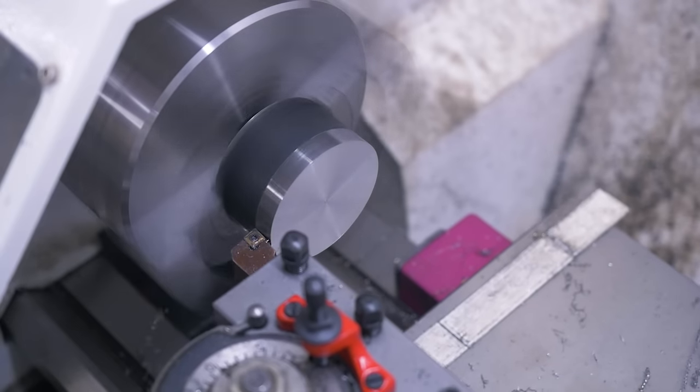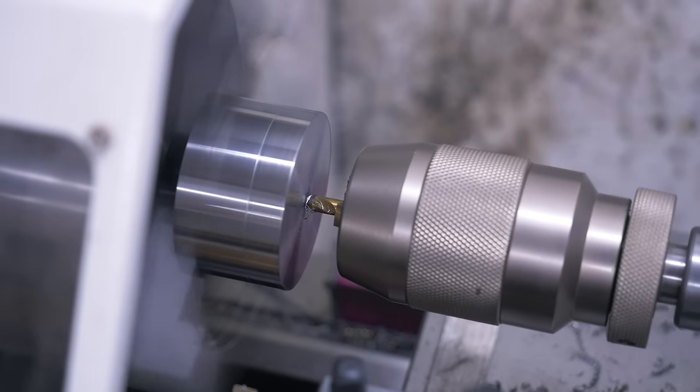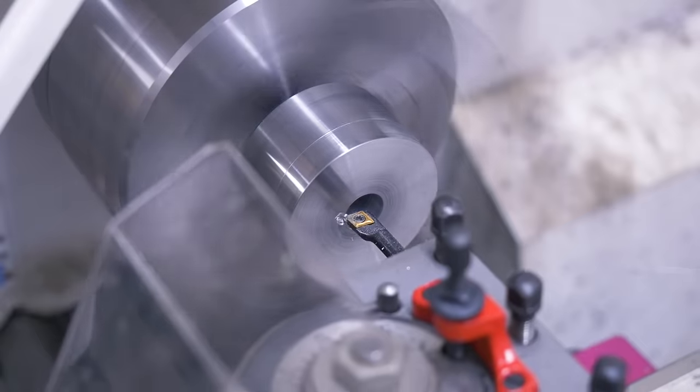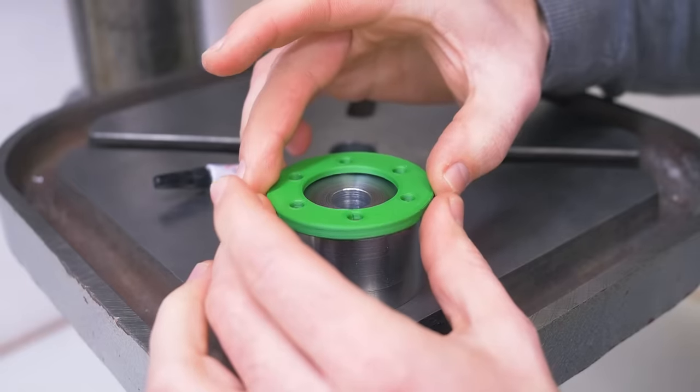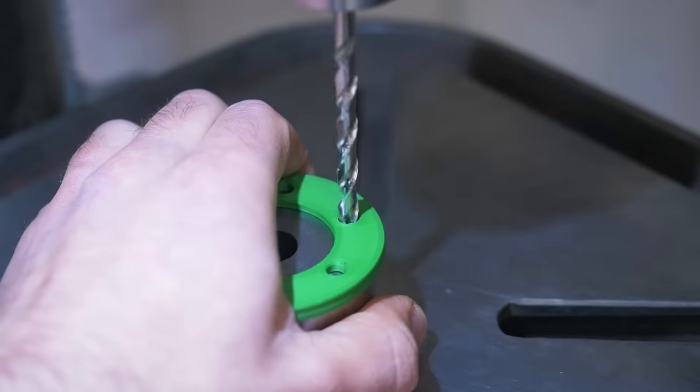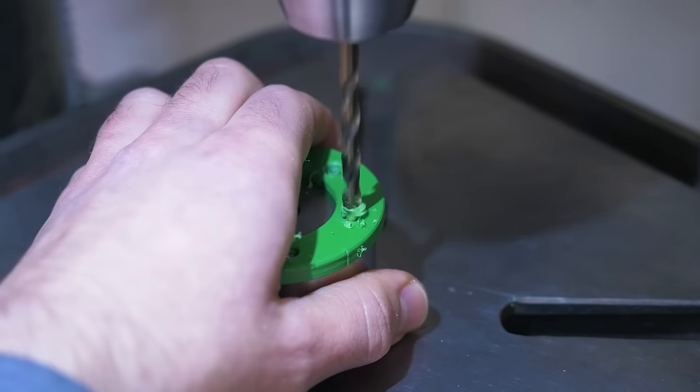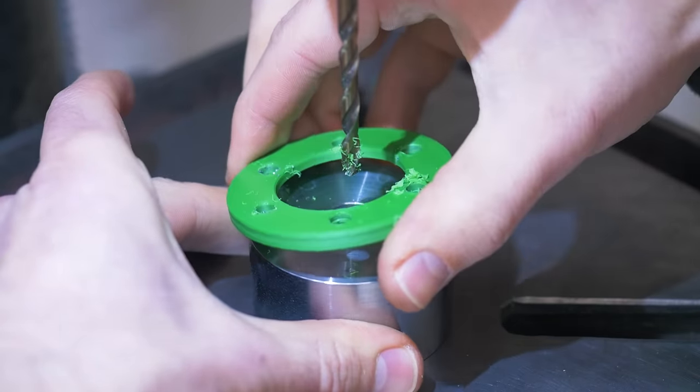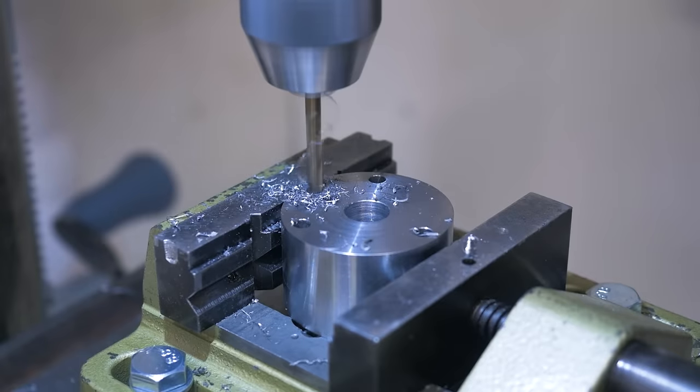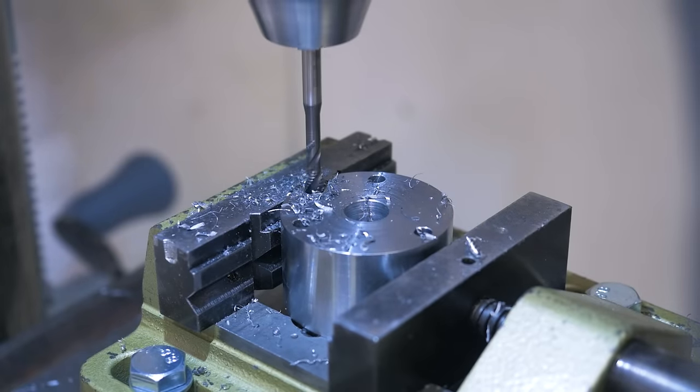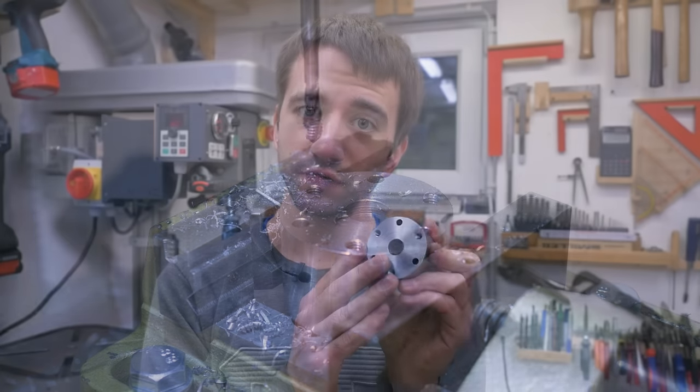I faced and turned a chunk of steel to size from both sides, drilled a hole and turned it to fit the hand crank shaft. Then I super glued a 3D printed template on to mark six evenly spaced holes with drill bits. Three are through holes for M5 socket head bolts and the other three get threaded M6.